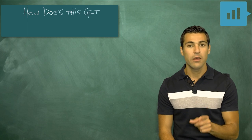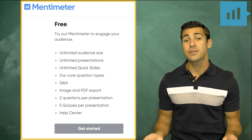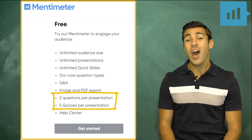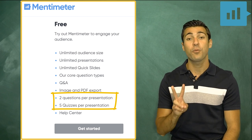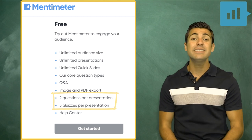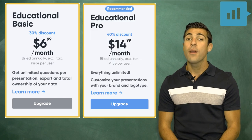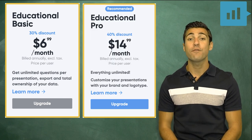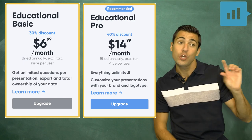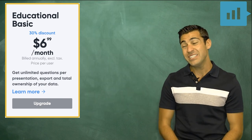So Mentimeter is free, but does have some restrictions. You can use all types of presentation slides like word clouds and polls, but you can only do five quiz questions and two premium questions per presentation. If you want unlimited features, Mentimeter offers educational access for $6.99 US a month or pro or premium access at $14.99 US a month. But unless you want to add your cute logo or anything else into the mix, basic is all you'll need.